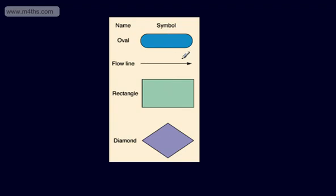The flowline connects these symbols — we might have the flowline from the start to the rectangle. The rectangle is an instruction; it might be, let A be equal to 2B. The diamond is a decision — we might be asked, is A greater than zero? We'd have a flowline coming off saying yes and a flowline saying no, and we need to make that decision. So: start, finish, connection, instruction, decision.